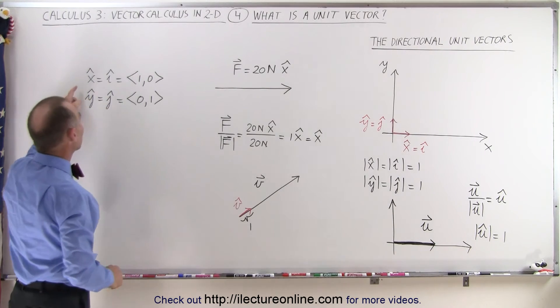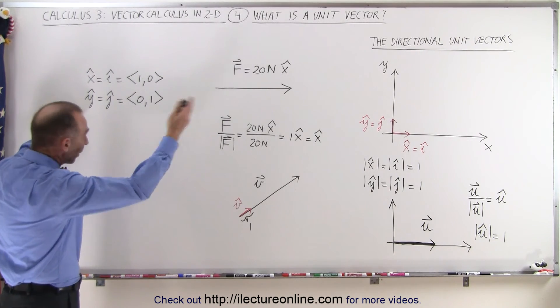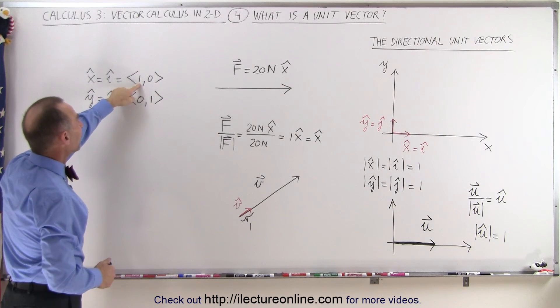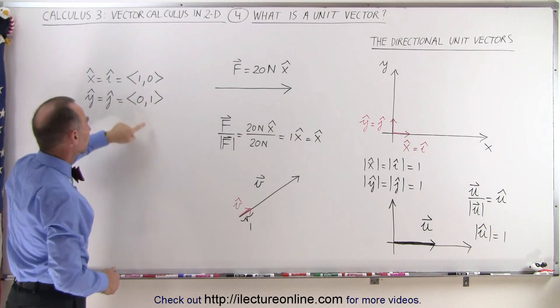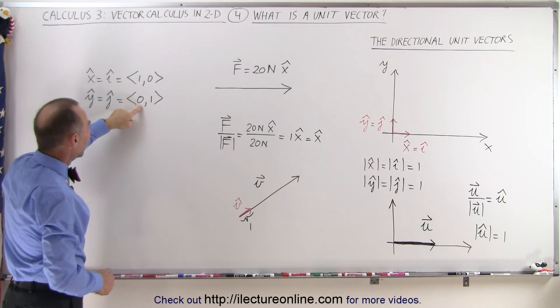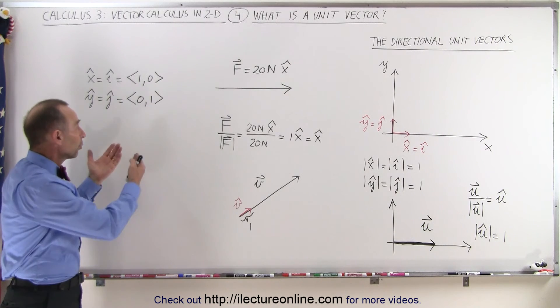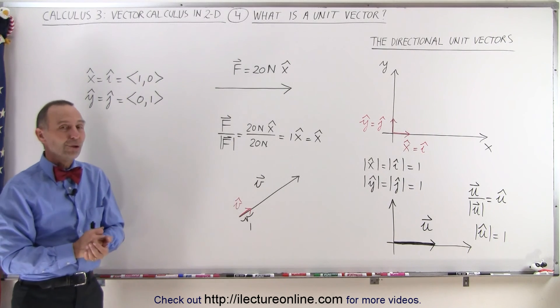Also note, we can also represent the unit vectors, in this case the directional unit vectors, like this as well. Notice that you say I have a magnitude of 1 in the x direction, a magnitude of 0 in the y direction, a magnitude of 0 in the x direction, and a magnitude of 1 in the y direction. So that's another way in which we can represent unit vectors.